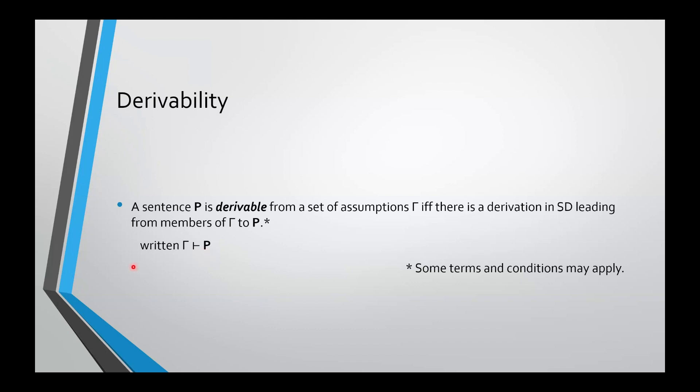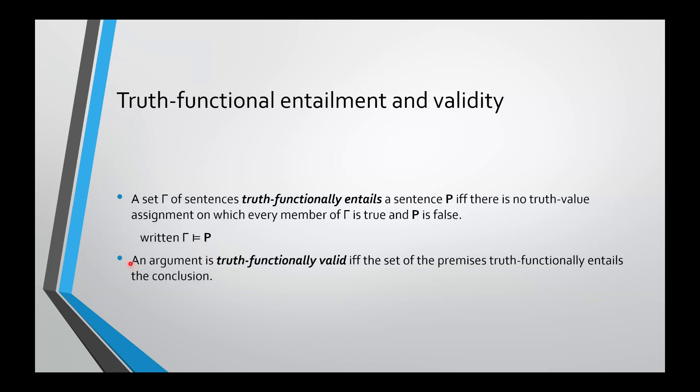Now, you're probably looking at that symbol and thinking of this. Remember this notion of truth functional entailment. Gamma truth functionally entails a sentence P, if and only if there's no truth value assignment on which every member of gamma is true and P is false. And that is written with this symbol here, which is called the double turnstile. These have very similar symbols because they're very closely related concepts.